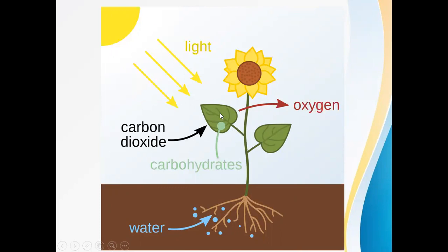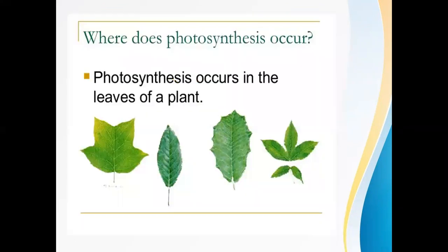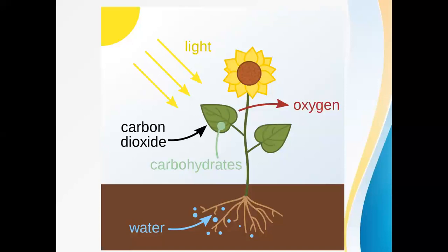With the help of all these things, plants prepare food which is stored in different plant parts. That food is in the form of glucose, or carbohydrates, and oxygen is released as a byproduct during this process.